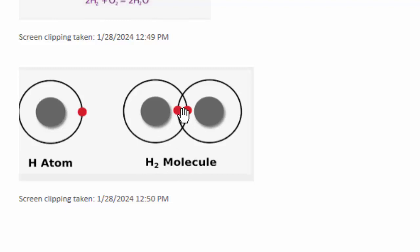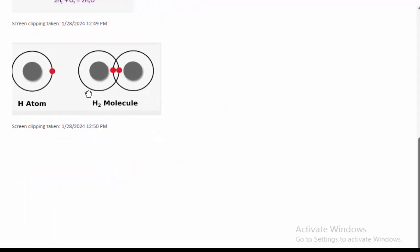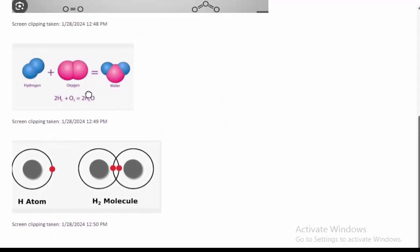So why is it stable? Because after sharing of valence electrons it will be duplet or octet complete, means that it will be two electrons or eight electrons.